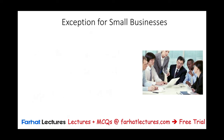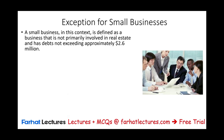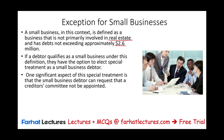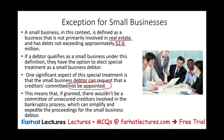For small businesses — defined as businesses not primarily involved in real estate with debt below $2.6 million — if a debtor qualifies as a small business under this definition, they have the option to elect special treatment as a small business debtor. One significant aspect is you can request that a creditor committee not be appointed, to simplify and expedite the proceeding rather than having creditors consulting constantly.